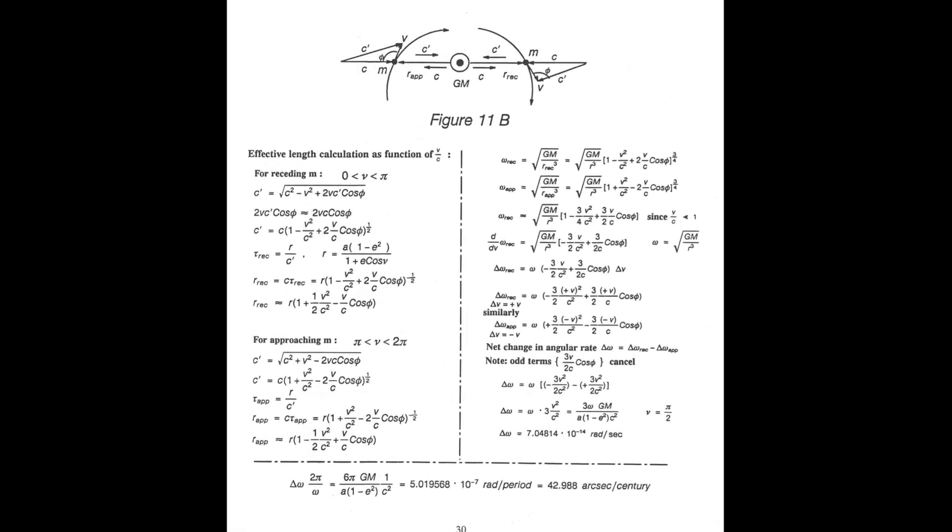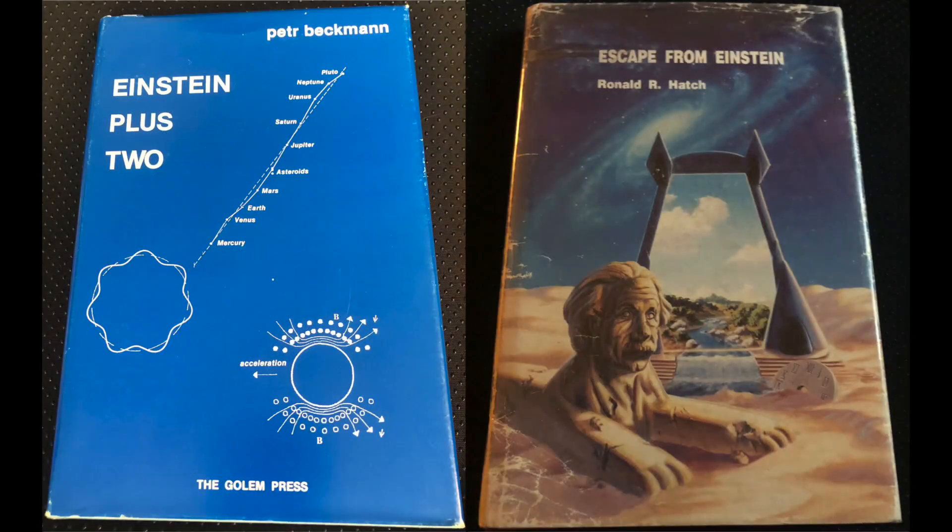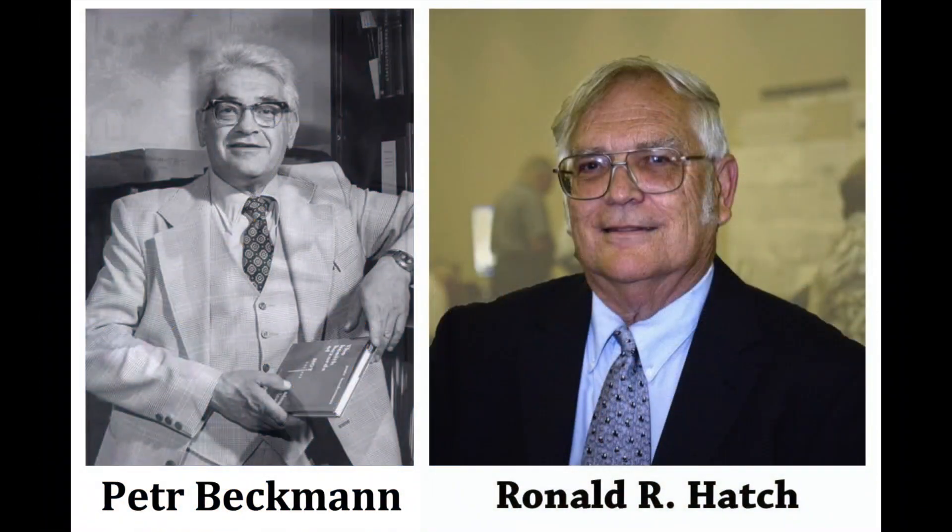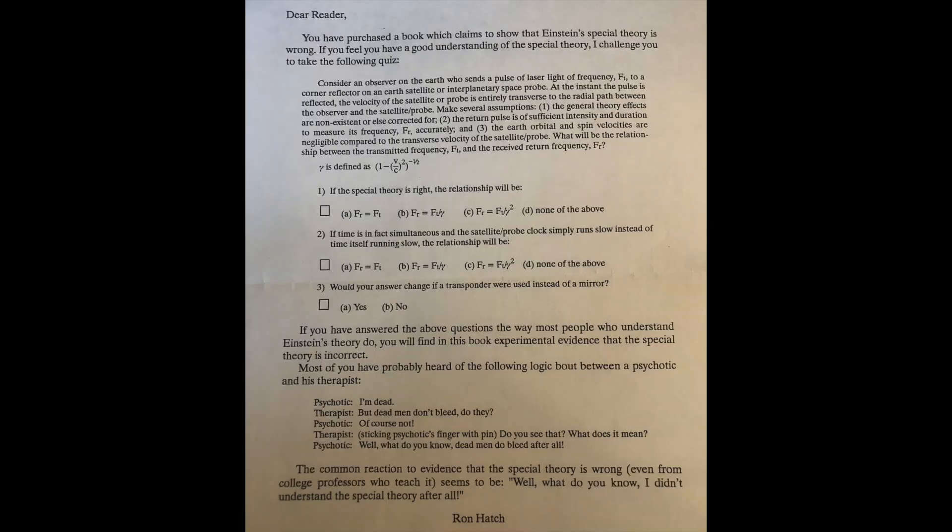Also, these two books by Peter Beckman and Ron Hatch, Einstein Plus Two and Escape from Einstein, have refutations for special relativity and general relativity and alternatives to time dilation and a lot more.